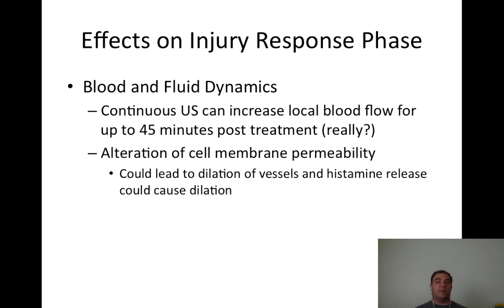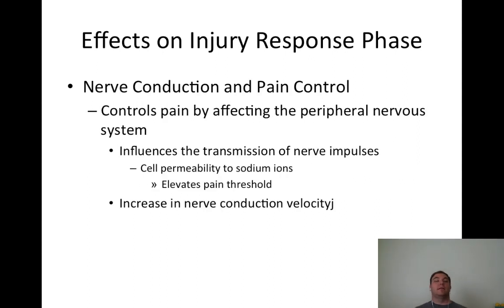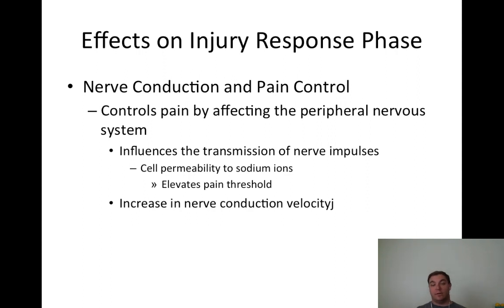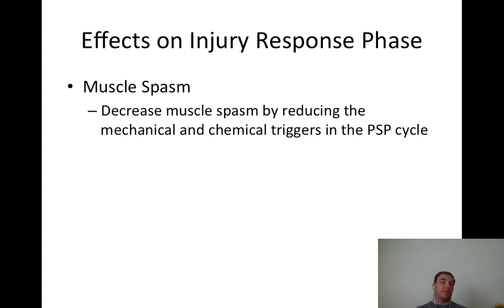Continuous ultrasound can increase local blood flow for up to 45 minutes post-treatment. Ultrasound controls pain by affecting the peripheral nervous system - it influences transmission of nerve impulses, cell membrane permeability, and sodium ions to elevate the pain threshold, decreasing perceived pain. It can also help decrease the pain-spasm-pain cycle by reducing mechanical and chemical triggers.